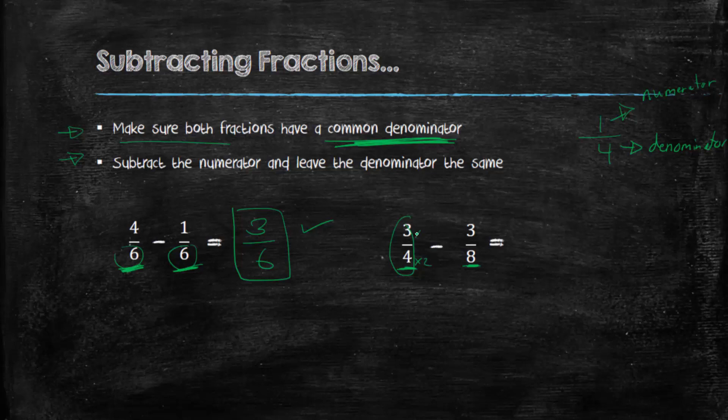If we multiply this by 2, multiply the numerator and the denominator by 2, we'll have, this fraction will be a 6 over 8. And then we could just subtract this way. Now we have a common denominator. 6 minus 3 is 3. So the answer is 3 over 8.